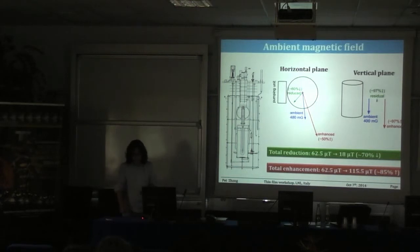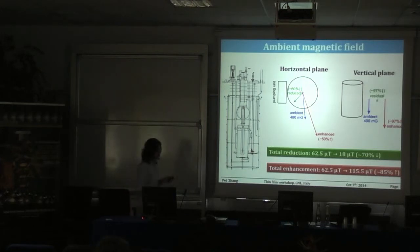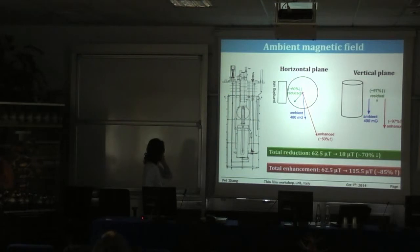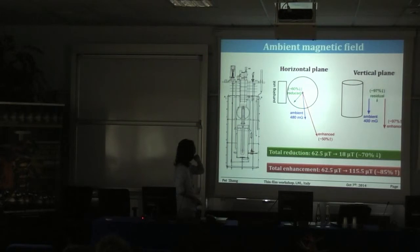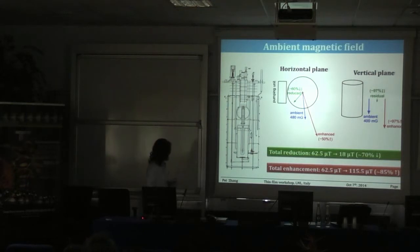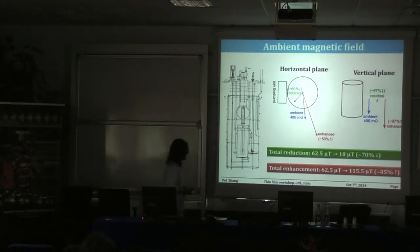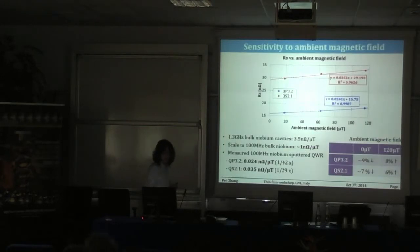The second topic is the ambient magnetic field. Our cavity has no shielding, so during cool-down the cavity is immersed in the Earth's magnetic field. In our cryostat, the ambient field is about 62 µT. We have some coils inside the cryostat, but we can't move or rotate them, so we cannot completely compensate — we have a residual of 18 µT, which is a 70% reduction. If we change the polarity, we enhance the field to 85 µT. This gives us three points to study how sensitive our cavity is to the magnetic field during cool-down.